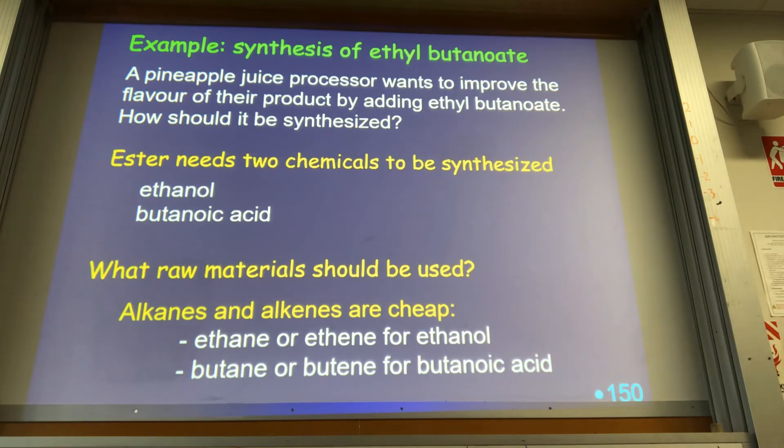We need to get good tasting pineapple juice. How do we get good tasting pineapple juice? Well, we add some chemicals to it. So we've got to make ourselves some ethyl butanoate. What are the two reactants that are going to produce ethyl butanoate? Well, that's going to come from the alcohol, that's going to come from the acid - so ethanol, butanoic acid. Well, we can usually use hydrocarbons, so either alkanes or alkenes. So ethane or ethene for ethanol, butane or butene for butanoic acid. So we're going to make those two and then we can react them together.